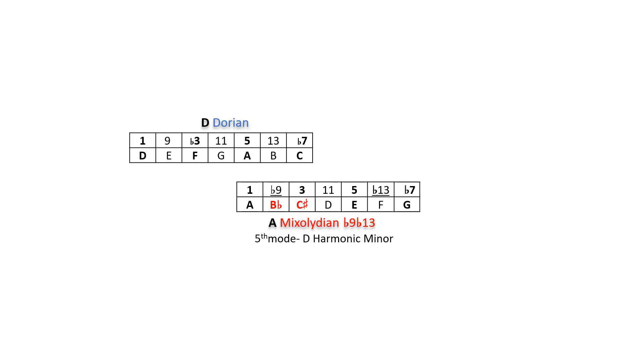Using a chord scale with more than one outside note creates a modal sound. In this case, the best scale for A7 is A mixolydian flat 9, flat 13, the fifth mode of D harmonic minor.